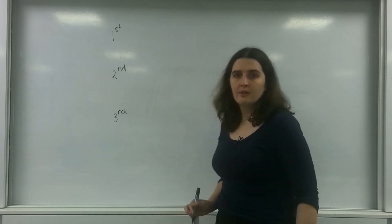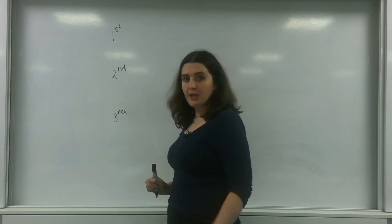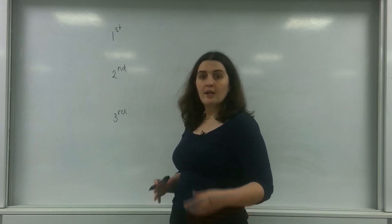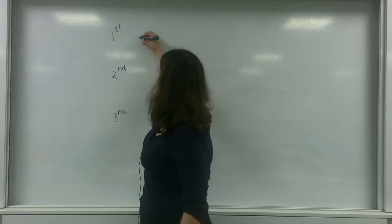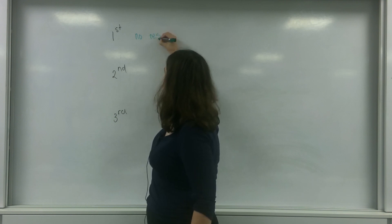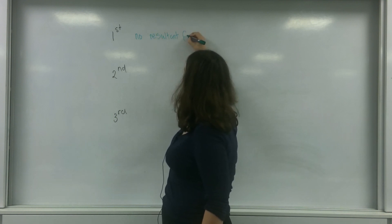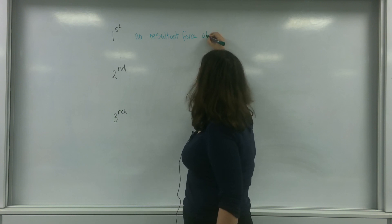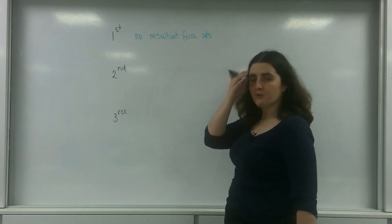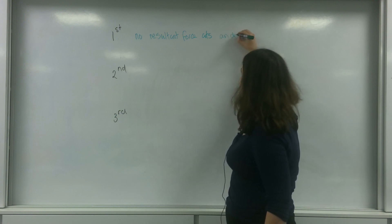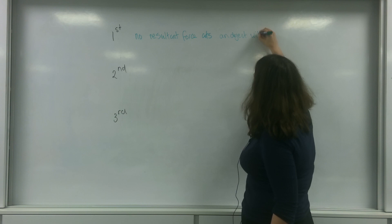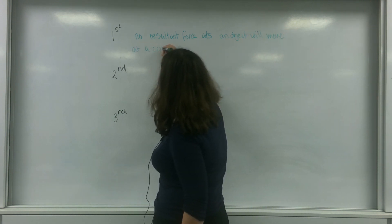Now the first law is that an object will stay at a constant velocity if there is no resultant force. So to put it bluntly, this one is when no resultant force acts, an object will move at a constant velocity.